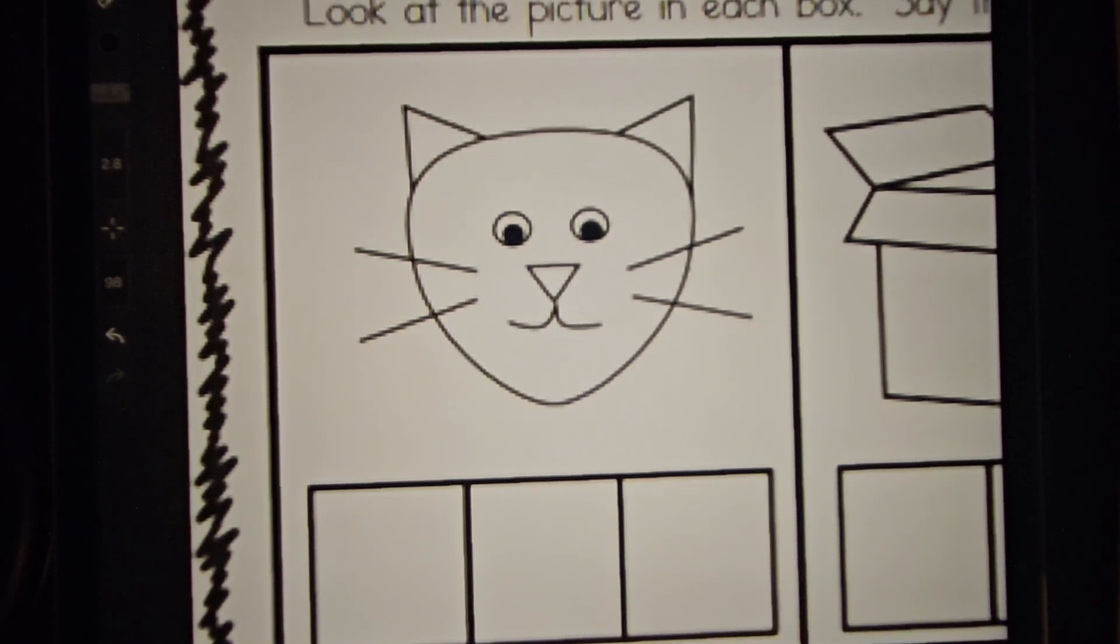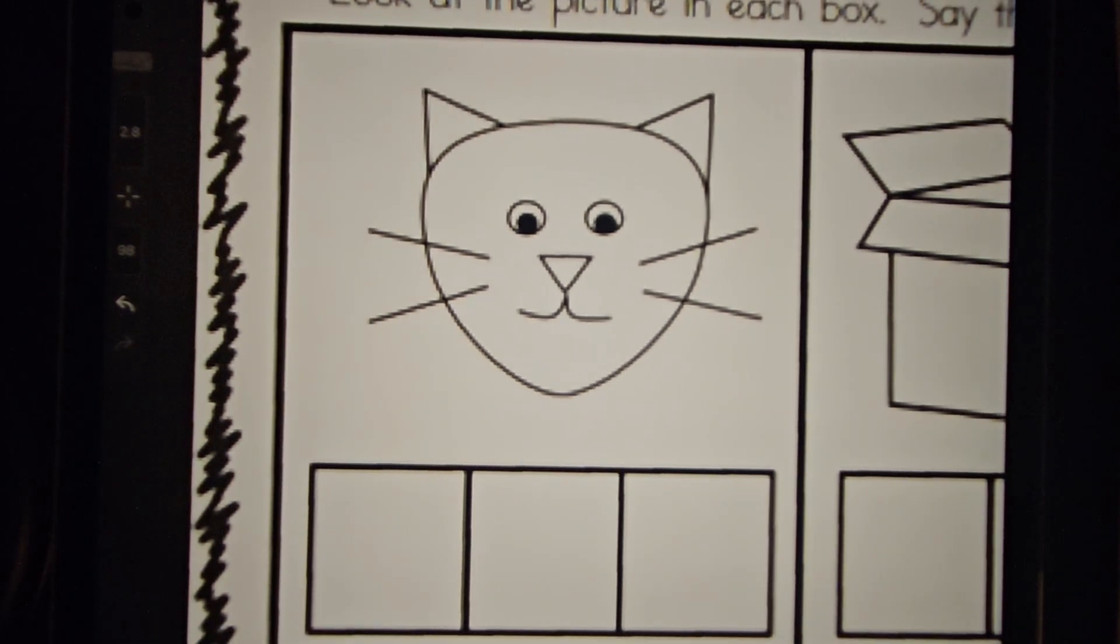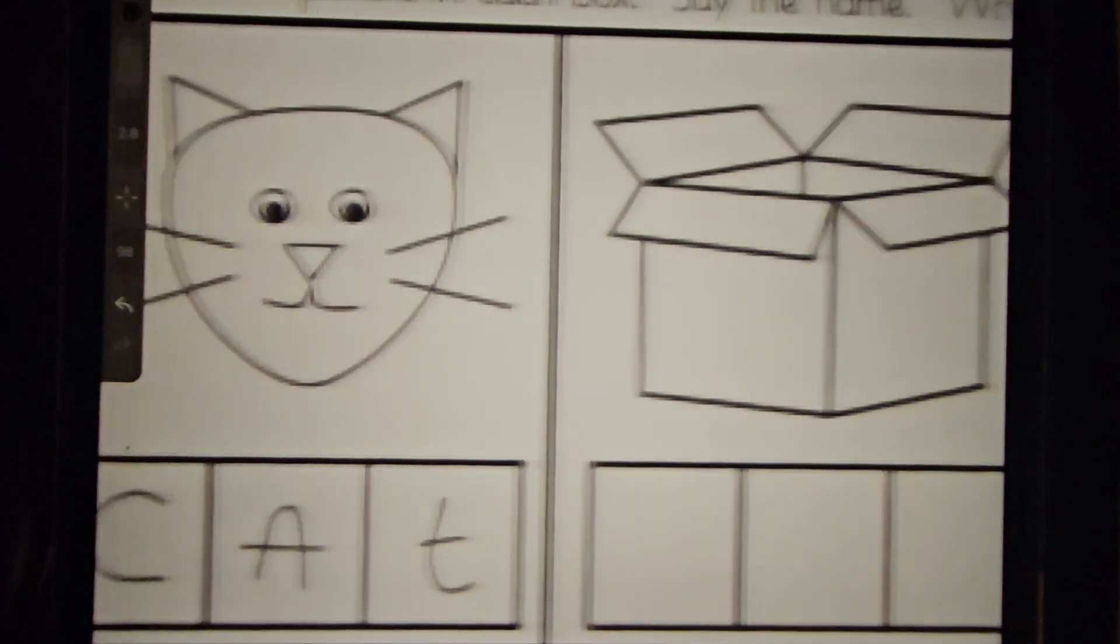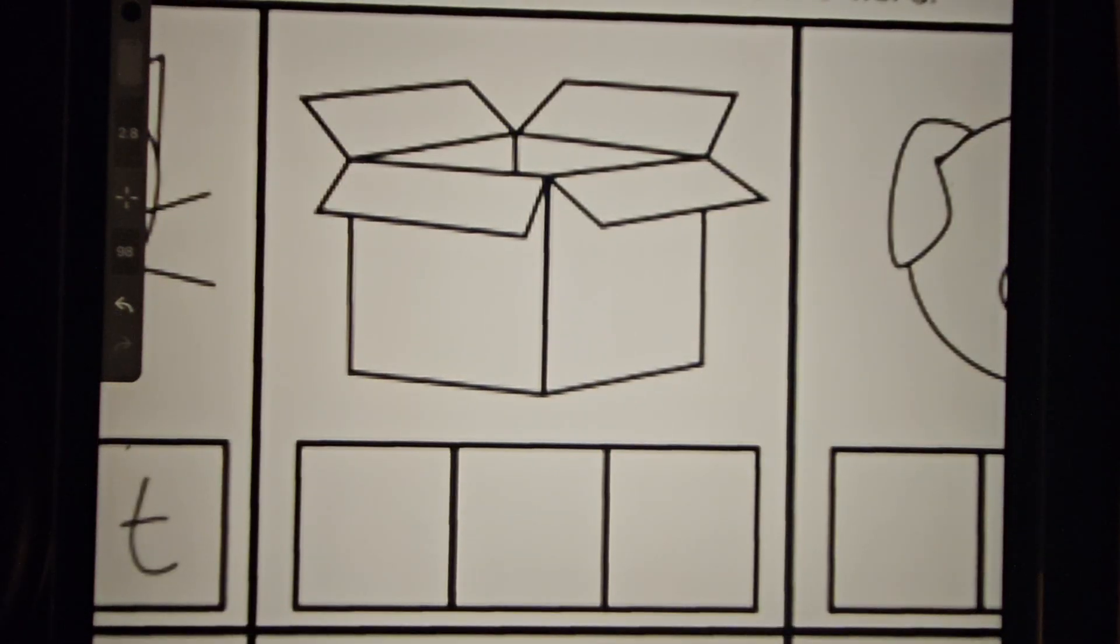What is this? A cat. Let's write cat then. C, A, T. Yes, cat. Well, we did pretty well in the first one. Oh, I know what this is. A box. B, O, X. Box.